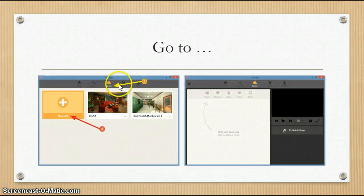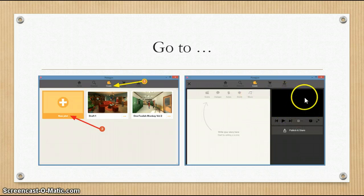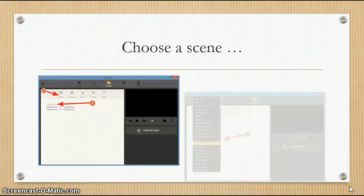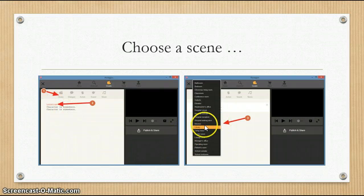Here we are. Once you click on 'Create' and then 'New Plot', you'll begin to see your characters in action. First, add a scene — that's the first thing you need to do. For the location, I've chosen the library.